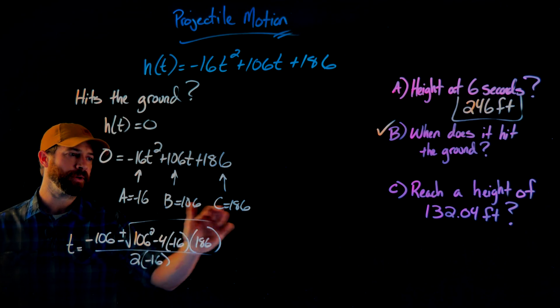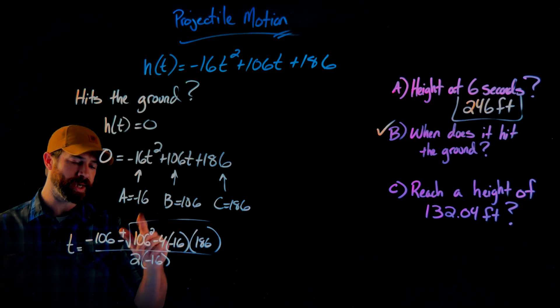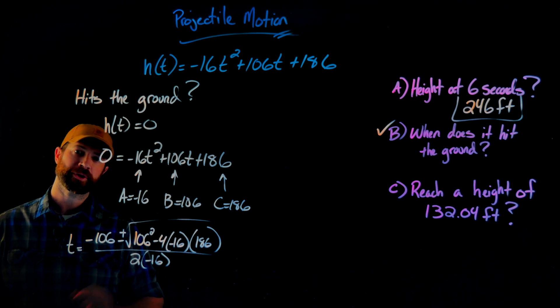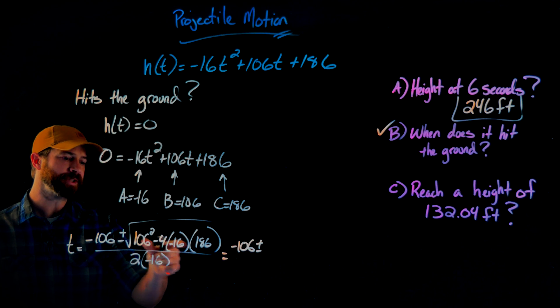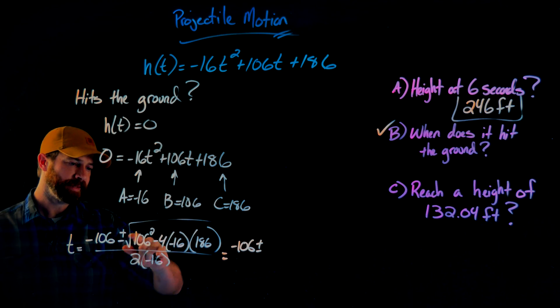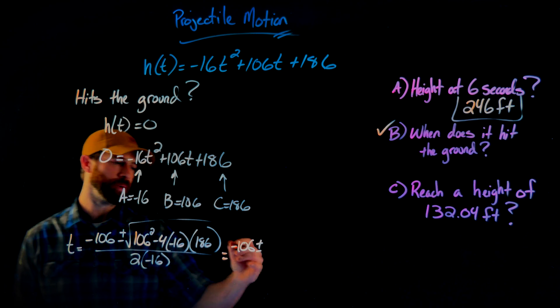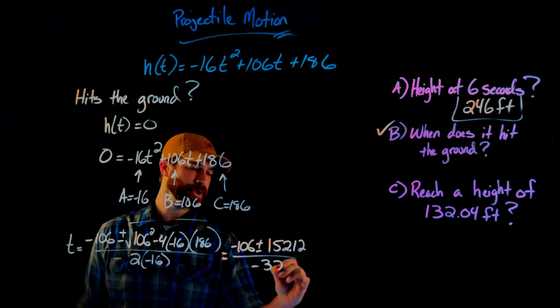Here I've plugged my three coefficients into the quadratic formula of negative b plus or minus the square root of b squared minus 4ac, all divided by two times a. As always, I'll deal with the discriminant first and take the square root of that. If I multiply this all out and take the square root, I get 152.12, all divided by negative 32.